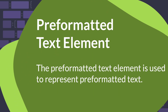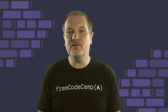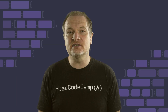The pre-formatted text element is used to represent pre-formatted text. Here's an example of using the pre-formatted text element to show a CSS declaration. When using the pre-element, you will need to be mindful of spacing because it will display exactly as written inside the HTML document.